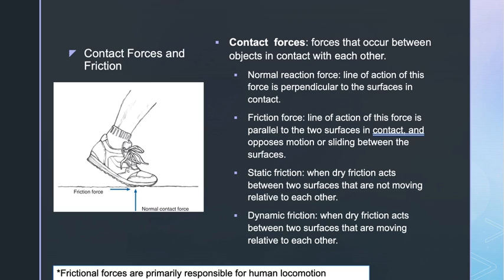Contact forces can be resolved into parts or components: the component of force that acts perpendicular to the surfaces in contact, and the component of force that acts parallel to the surfaces in contact. We call the first component the normal contact force or normal reaction force — 'normal' refers to the fact that the line of action of this force is perpendicular to the surfaces in contact. The second component is called friction. The line of action of friction is parallel to the two surfaces in contact and opposes motion or sliding between the surfaces.